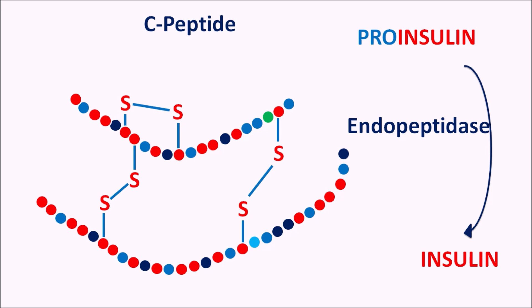Insulin is a dimeric protein with two peptide chains interconnected by two inter-chain disulfide bridges, and within the A chain, one intra-chain disulfide bridge is present. We have already seen where these are located and memory aids to remember them.